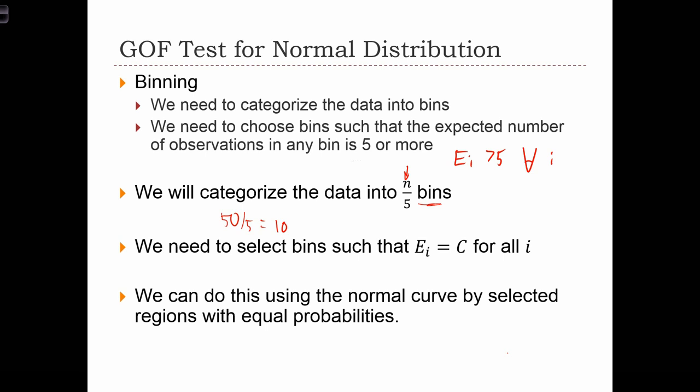So in that case, this C over here is 5, but it doesn't have to be 5. It just means that C needs to be greater than 5. So we can split the data up into a smaller number of bins, and therefore the expected value in each bin would be greater than 5. That would be okay, too. But we can never split the data up into bins such that the expected value of any bin drops below 5.